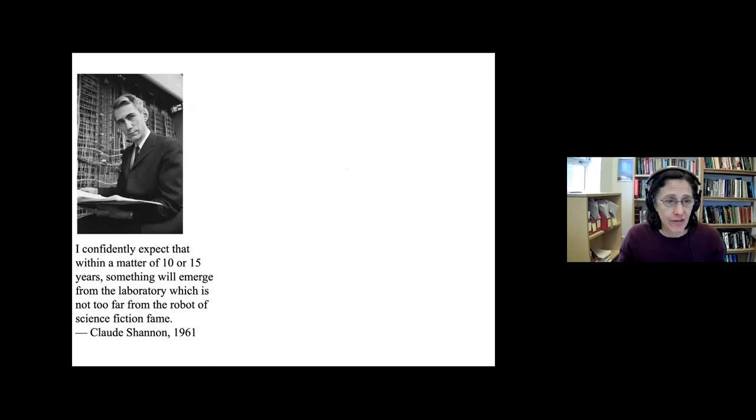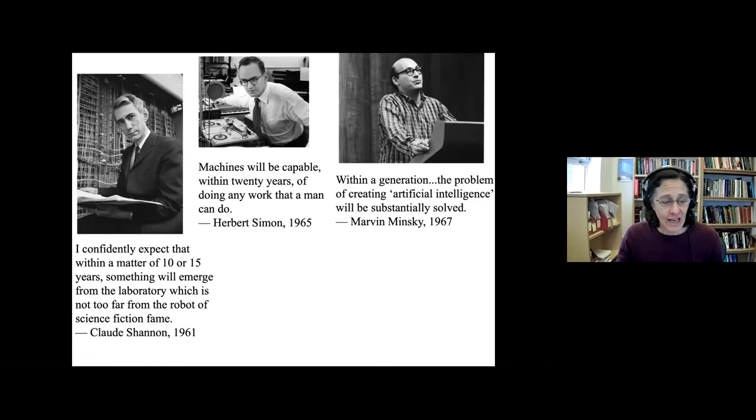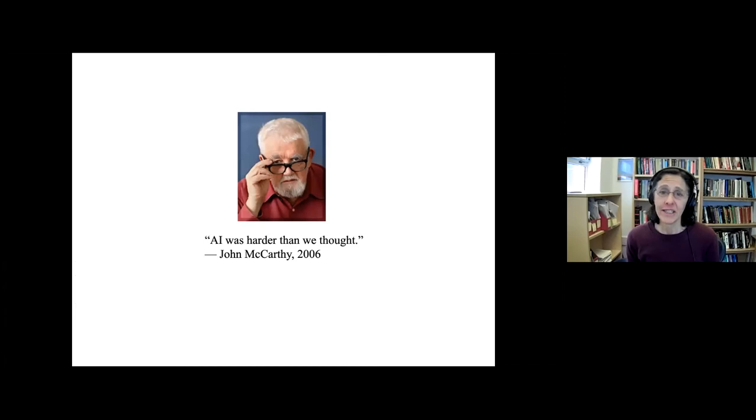So these kinds of predictions have been going on since the field of AI began. Claude Shannon, the inventor of information theory, predicted in 1961 that within 10 or 15 years, we'd see something like what he called the robots of science fiction fame, those robots we see in movies. A few years later, Herbert Simon, one of the pioneers of AI, predicted that within 20 years of 1965, machines would be able to do any work that a man can do. Of course, that's the sexist language of 1965, but he meant any work that any human would be able to do. Marvin Minsky, the founder of the AI lab at MIT, predicted that within a generation, maybe 20, 25 years from 1967, the problem of creating AI would be substantially solved. Well, many years later, John McCarthy, another pioneer of AI, said that the problem was that AI was harder than we thought.